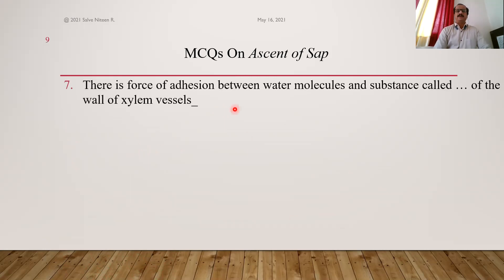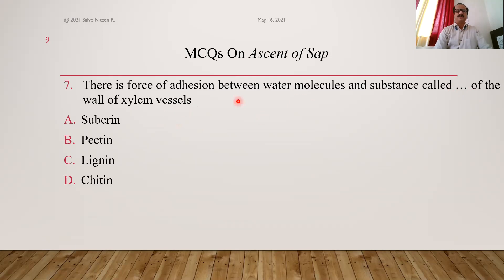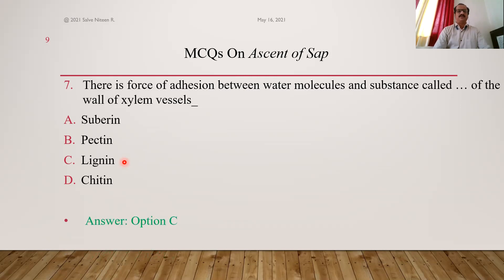Question 7: There is also an adhesion force — attraction between different molecules, such as water molecules and molecules of the xylem vessel wall. In the case of xylem vessels, the substance for which water molecules have force of attraction is lignin. Xylem tracheids and vessels have a primary cell wall of cellulose and a secondary wall of lignin, making them thick-walled dead elements. This adhesion force is of magnitude 50 atm, and it helps maintain the continuity of the water column. Option C is the answer.